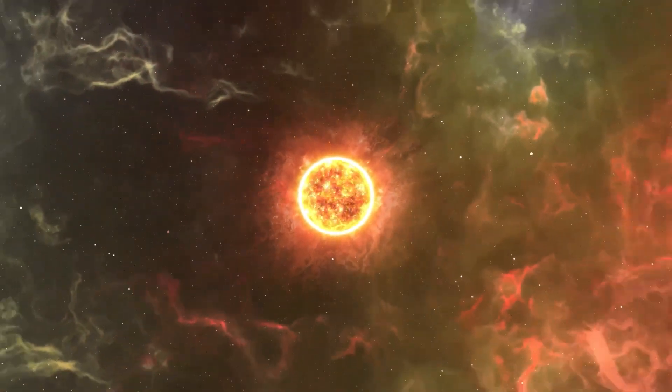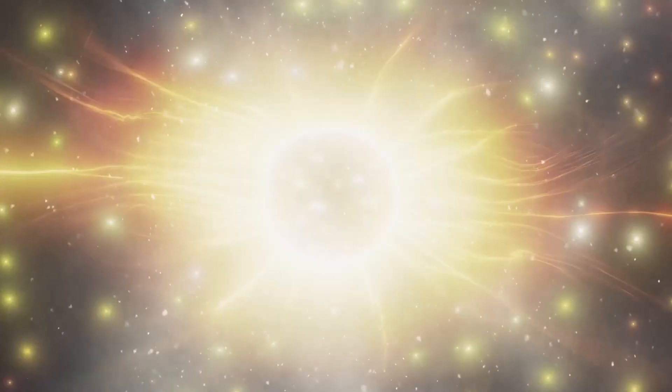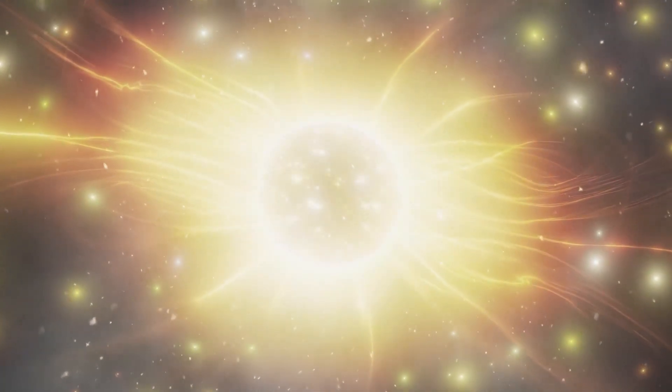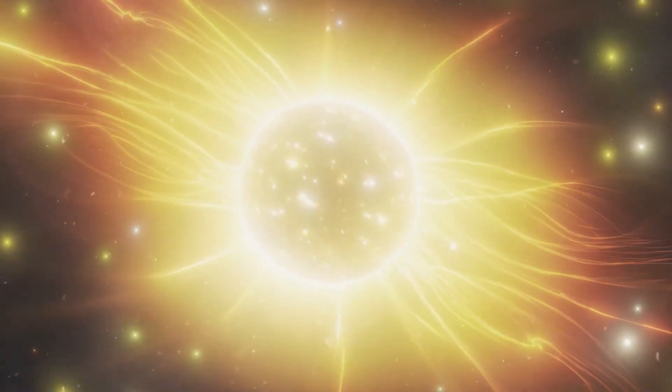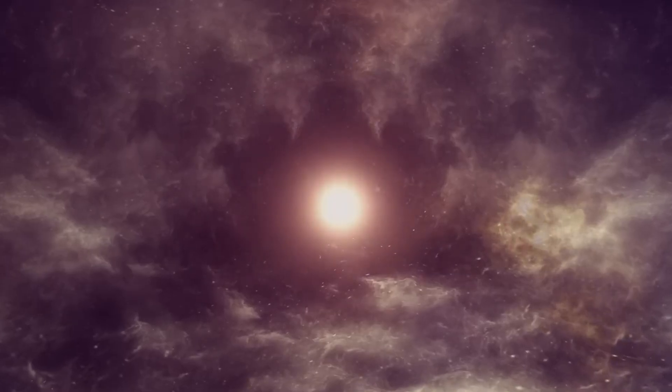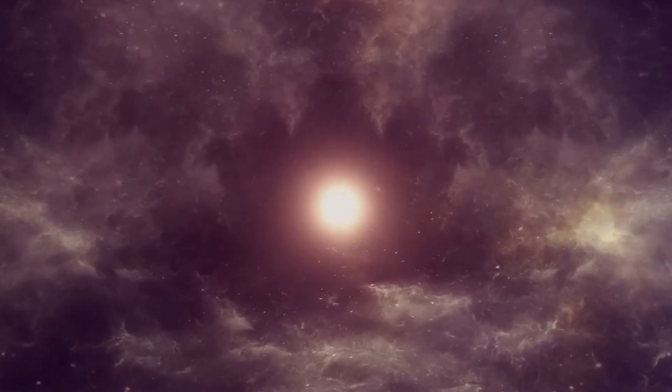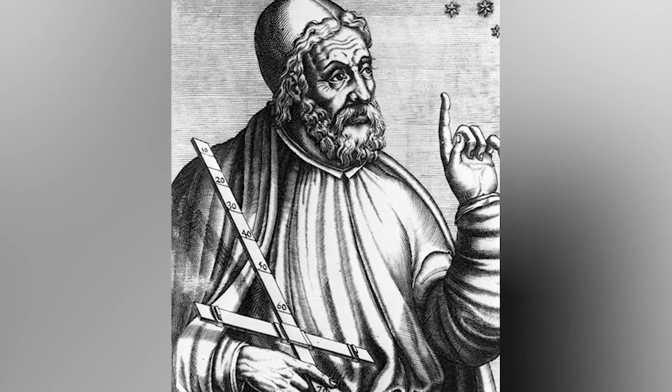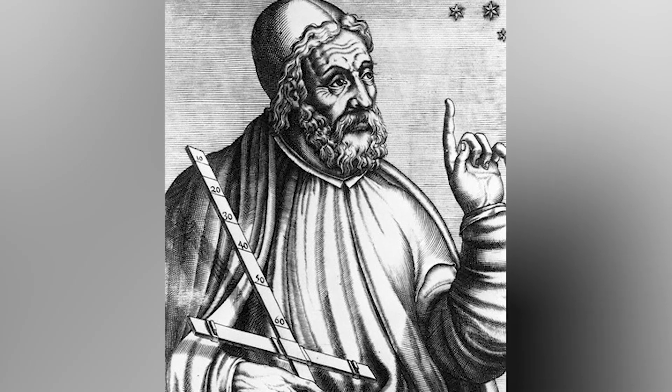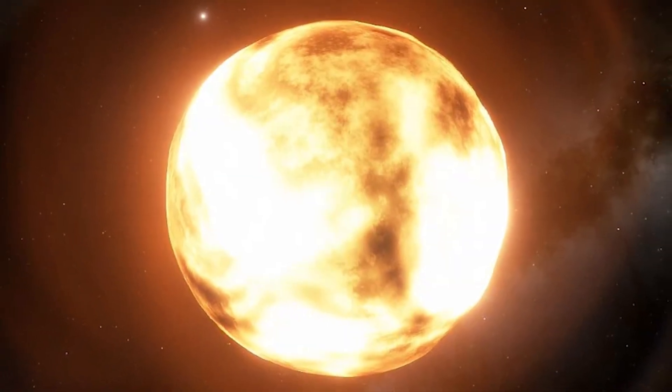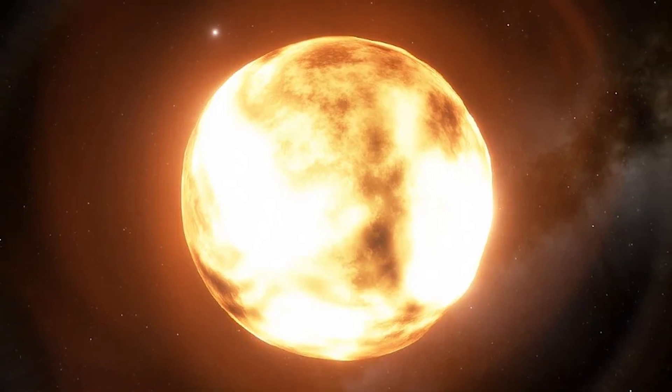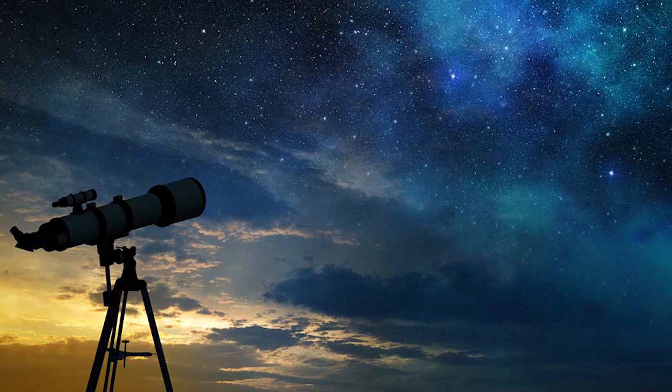Betelgeuse holds a special place in human history. It is one of the brightest stars in the constellation Orion and has been observed and revered by various cultures for centuries. Ancient Egyptians and Mesopotamians recorded its brilliance, and in the Middle Ages, astronomers like Ptolemy described it in their star catalogues. The systematic study of Betelgeuse began in the 16th and 17th centuries with the advent of better telescopes.